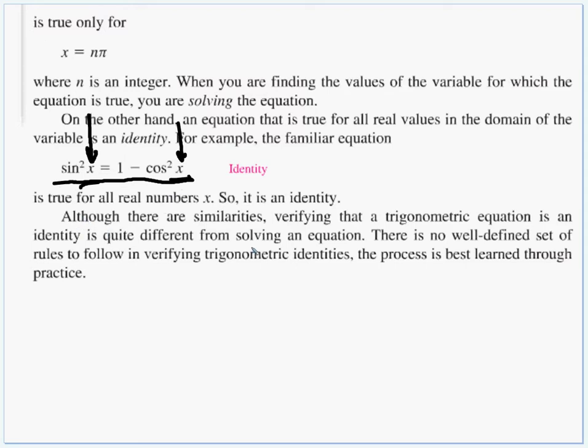For example, here is sine squared plus cos squared equals 1, but they moved the cos squared to the other side by subtracting it. But this is always true no matter what you put in for x. Of course, you've got to put the same x value in here and here because it's the same variable. But you can plug in any number for x and an identity is always going to be true. Although there are similarities, verifying that a trig equation is an identity is quite different from solving an equation.